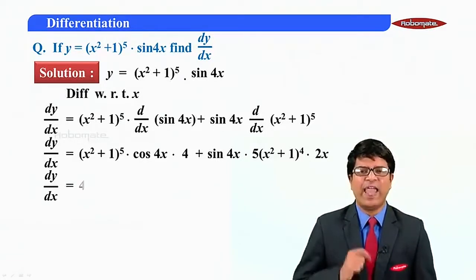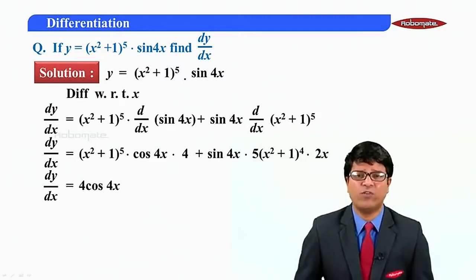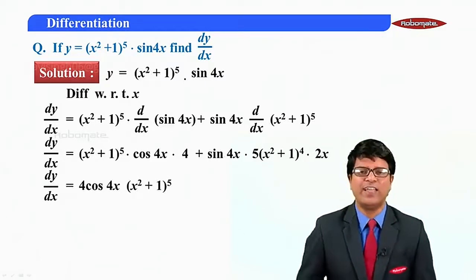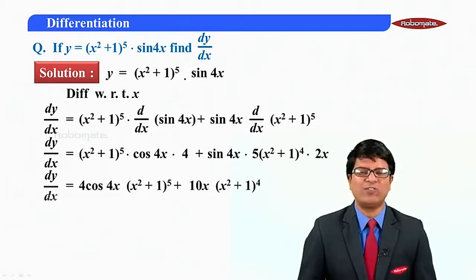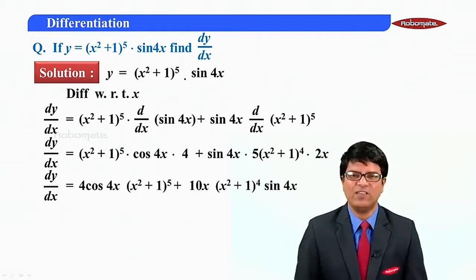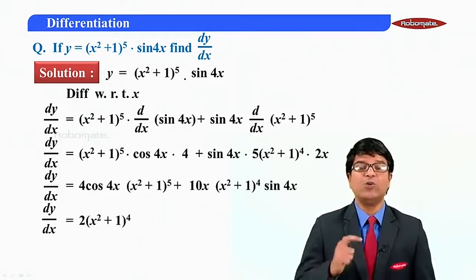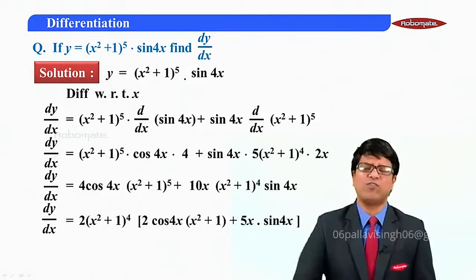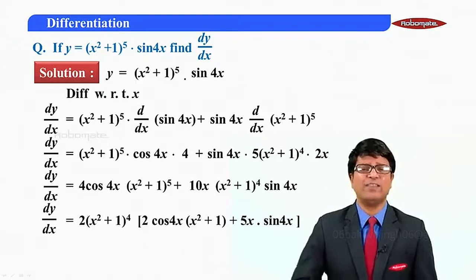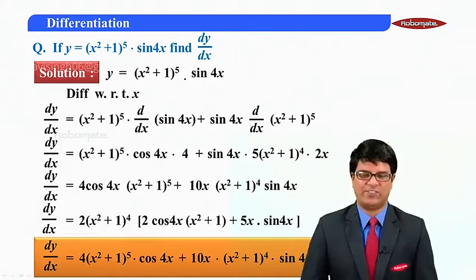So dy/dx = (x² + 1)⁵ · 4cos(4x) + 10x·(x² + 1)⁴ · sin(4x). We can take a common factor. The common term is 2·(x² + 1)⁴, giving dy/dx = 2·(x² + 1)⁴ · [2cos(4x)·(x² + 1) + 5x·sin(4x)].